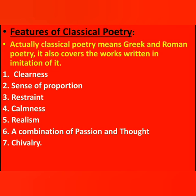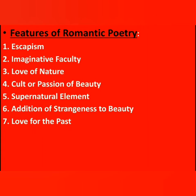The features of romantic poetry include: escapism — escape from the real world into an imaginary one — imaginative faculty, love of nature, cult or passion of beauty, supernatural elements, addition of strangeness to beauty, and love for the past. Also, in some romantic poems like those of John Keats, we find the element of Hellenism, which means affinity to the Greeks.